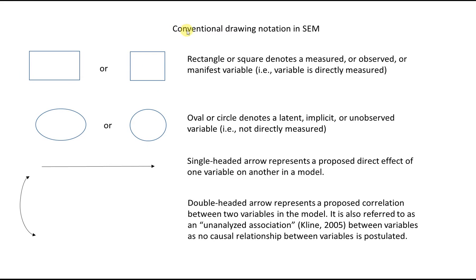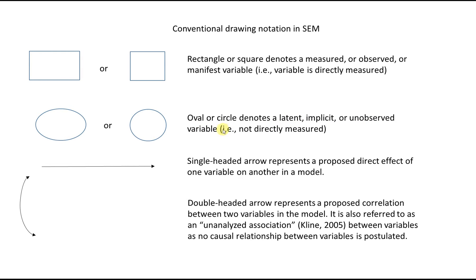The notation in SEM follows a conventional drawing scheme. Rectangles or squares are utilized to denote measured, observed, or manifest variables — these terms are all treated as synonymous. Basically, these are variables that are directly observed in the data. Ovals or circles denote implicit, latent, or unobserved variables, which are not directly measured in the data. Generally, they are indicated by measured variables.